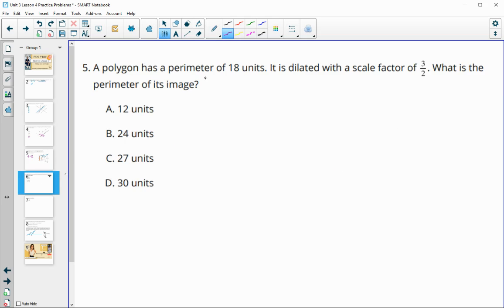Number five, a polygon has a perimeter of 18 units and it's dilated with a scale factor of three halves. What is the perimeter of the image? So remember perimeter dilates at the same scale factor as the sides. So if the original perimeter is 18, we can multiply that by the scale factor and get our new perimeter. So 18 times three is 54, and then we have divided by two. And 54 divided by two is 27 units.